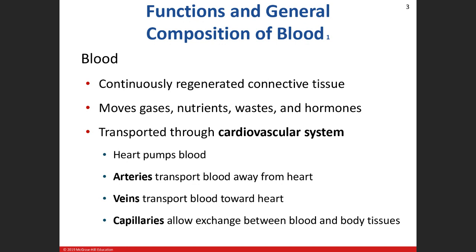We just finished talking about Chapter 17, the endocrine system, so the hormones. Our circulatory system — our blood — is going to be the delivery mechanism for those chemical messengers, those hormones. We learned in 210 about one of our control center mechanisms, the nervous system. Another control center mechanism in our homeostasis model is the endocrine system, which we just finished. So now we get to talk about how we move those hormones throughout the body.